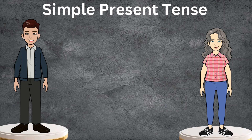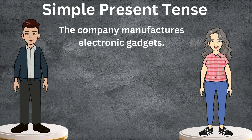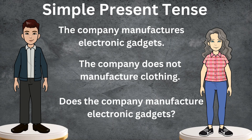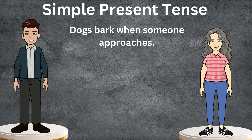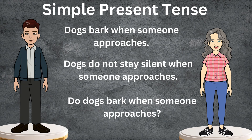Let's try this one: the company manufactures electronic gadgets. The negative sentence would be something like: the company does not manufacture clothing. Or the interrogative one would be: does the company manufacture electronic gadgets? Now let's try this one: dogs bark when someone approaches. We can make the negative sentence as: dogs do not stay silent when someone approaches. Or the interrogative sentence: do dogs bark when someone approaches?